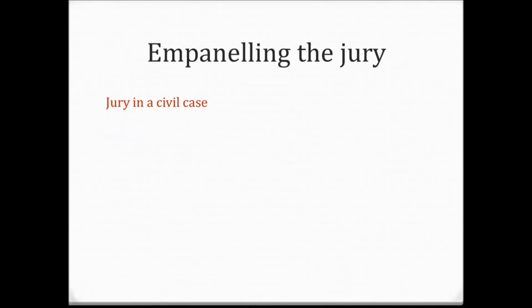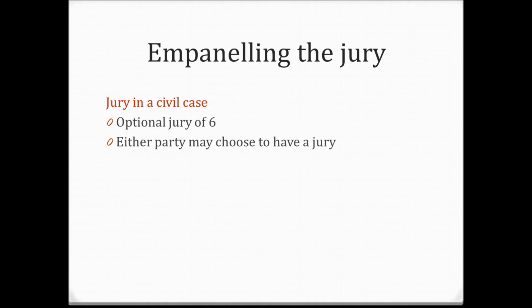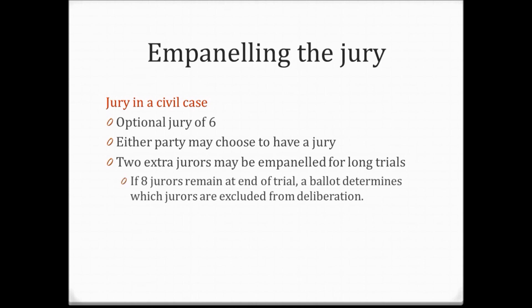When empanelling a jury in a civil case, there's an optional jury of six. Either party can choose to have a jury present. Two extra jurors are selected for long or complex trials, and if eight jurors remain at the end of the trial, a ballot determines which jurors are excluded from deliberations so that only six take part. This ensures the case doesn't get abandoned if jurors are lost through illness or death. The trial can continue with as few as five jurors; if it drops below five, the case needs to be retried.